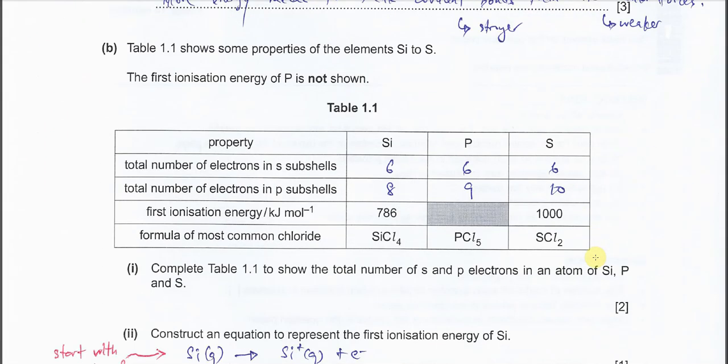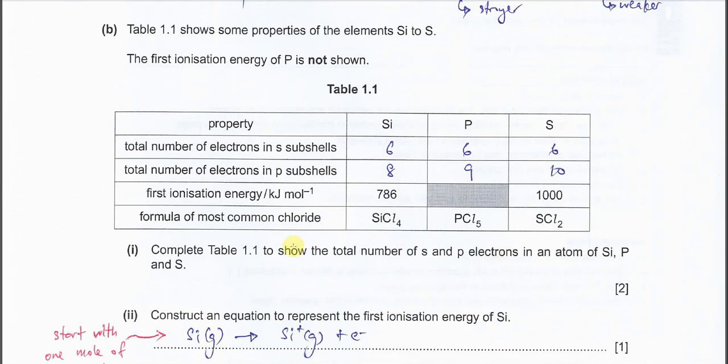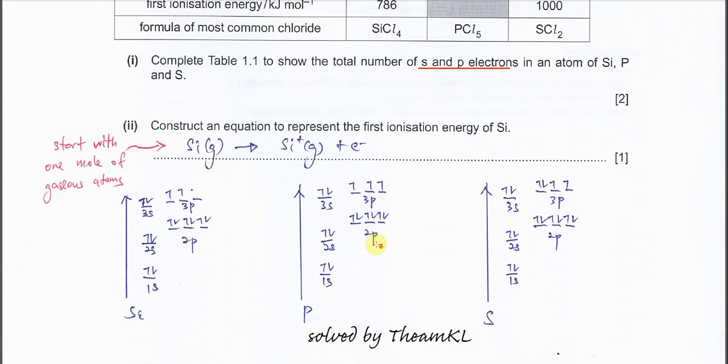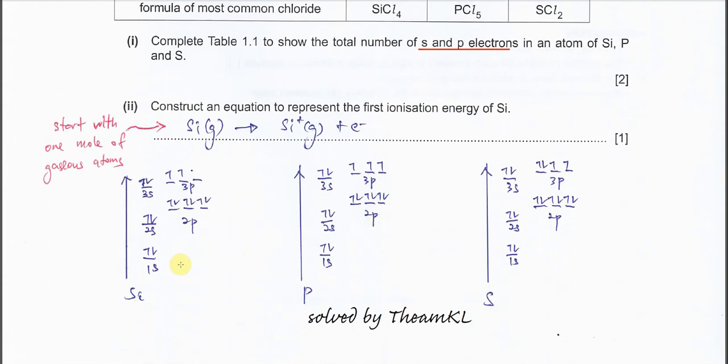Part B1. Complete Table 1.1 to show the total number of s and p electrons in silicon, phosphorus, and sulfur. For this one, you need to use the diagram to show.